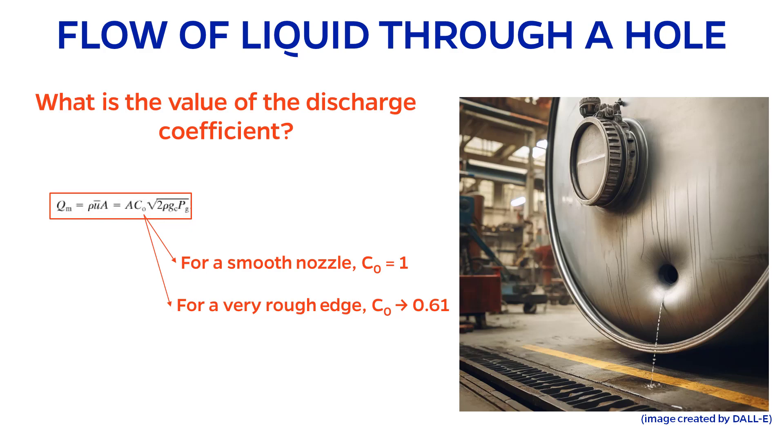On the other hand, a very rough, jagged hole has a discharge coefficient that tends towards 0.61. The true value for a given hole will be somewhere in between these values.